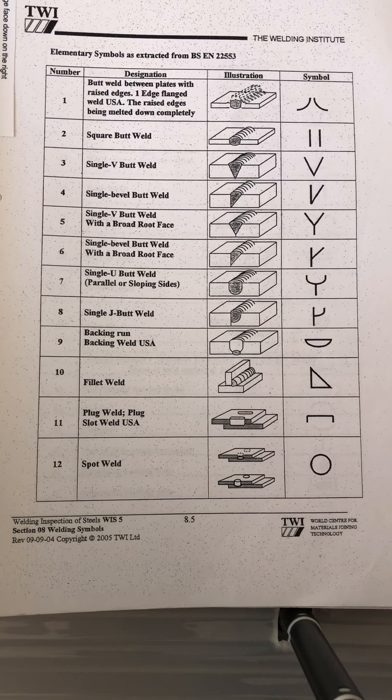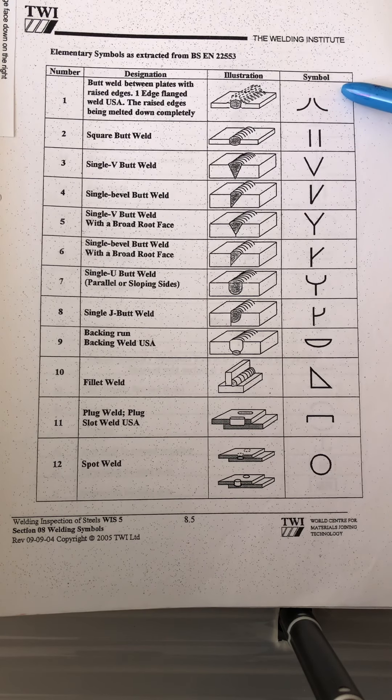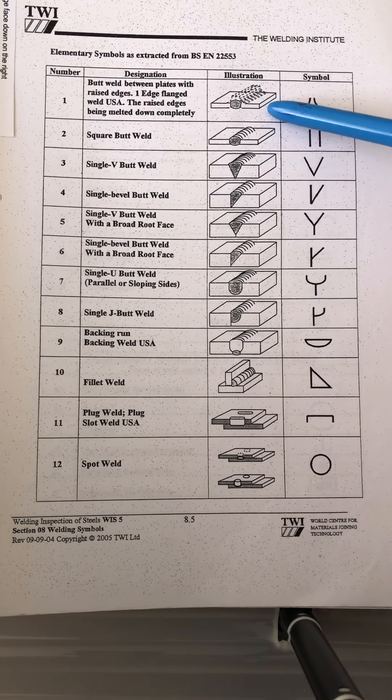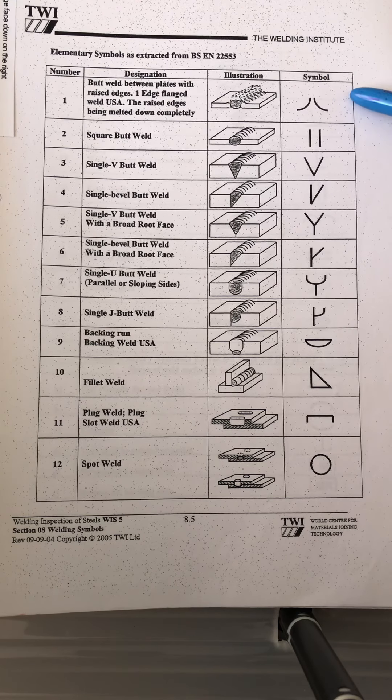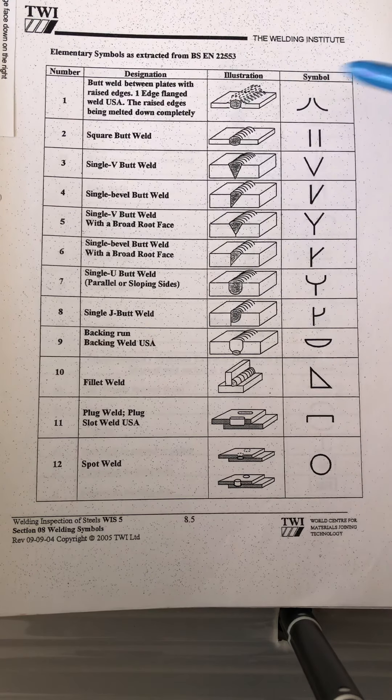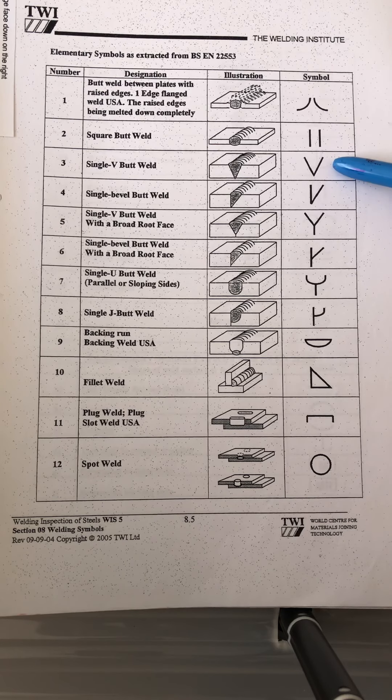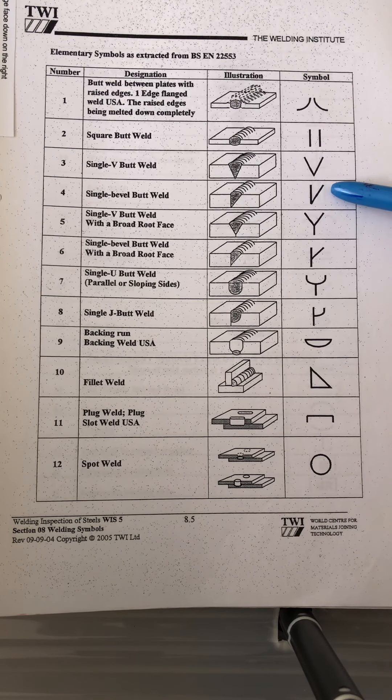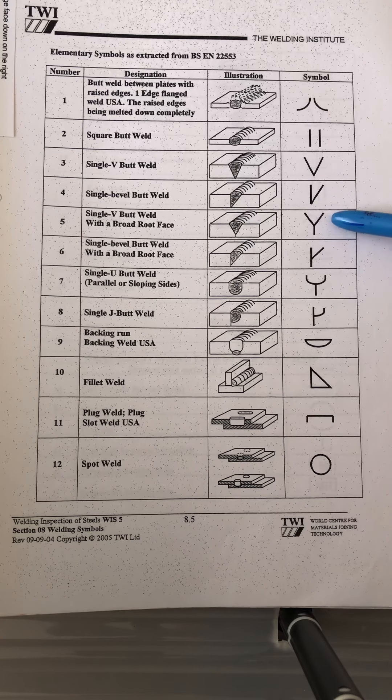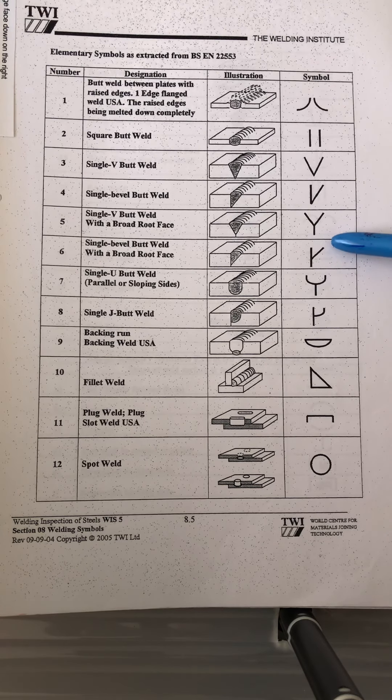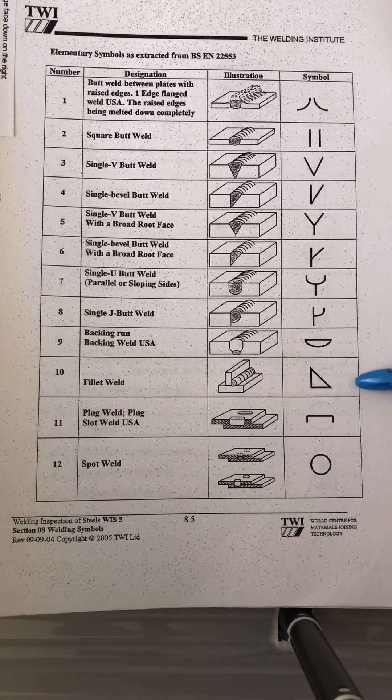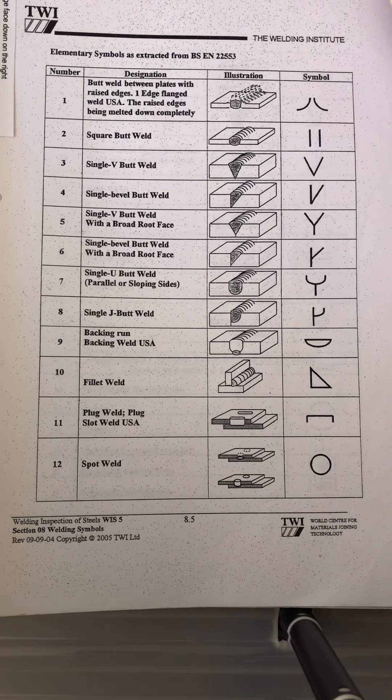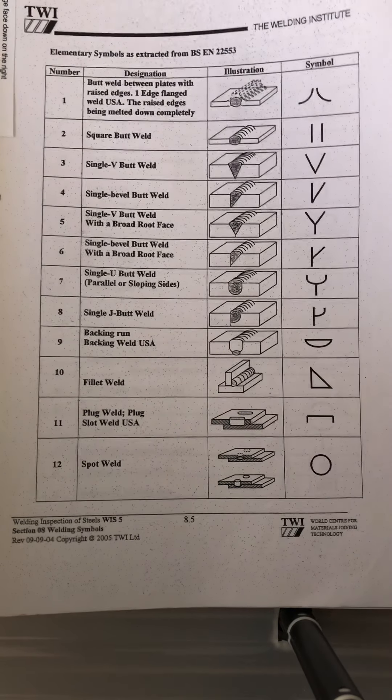This is the kinds of symbols - elementary symbols. This one is the illustration and this is the symbol for square butt weld, the symbol for single V butt weld, single bevel, single bevel butt weld, single U, single J, backing run, fillet plug, and spot weld. That is the information that you need to know.